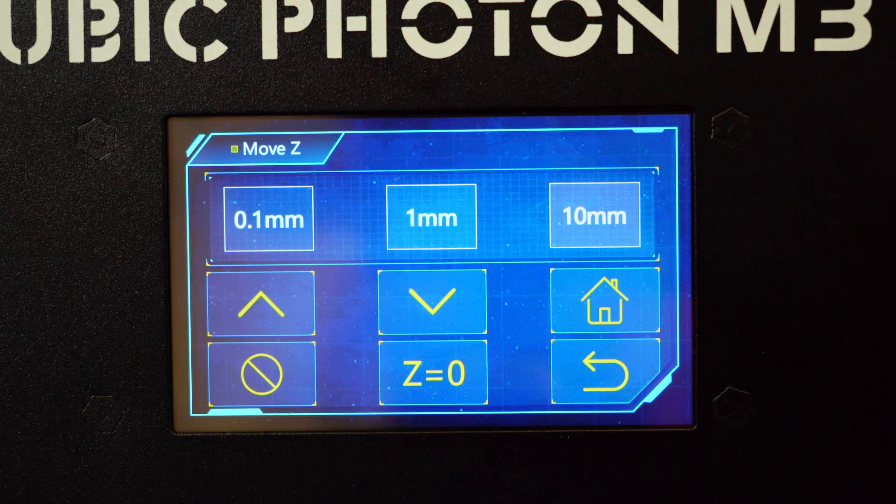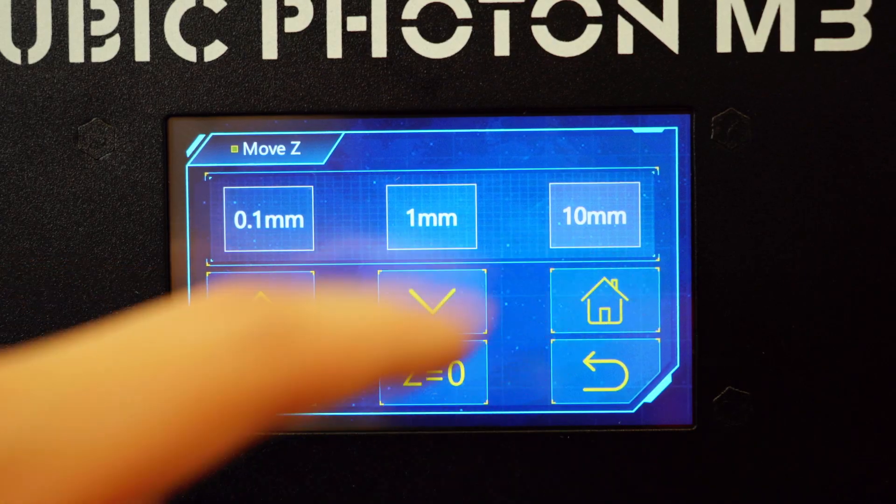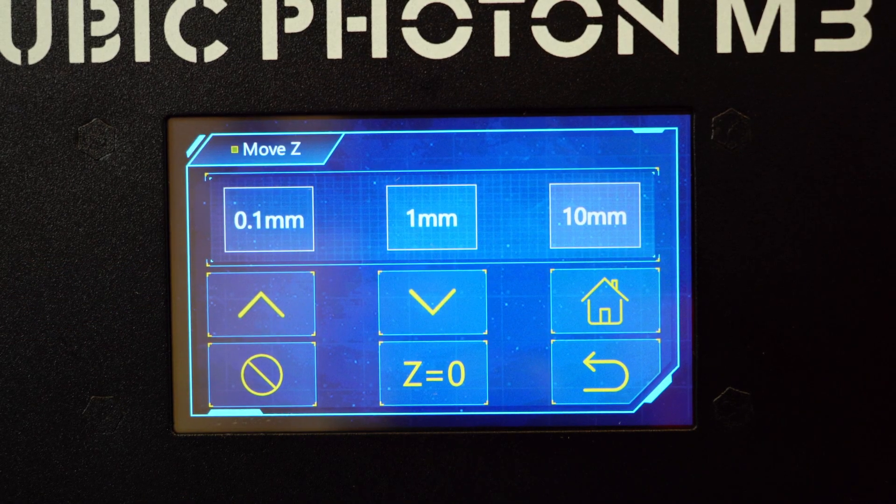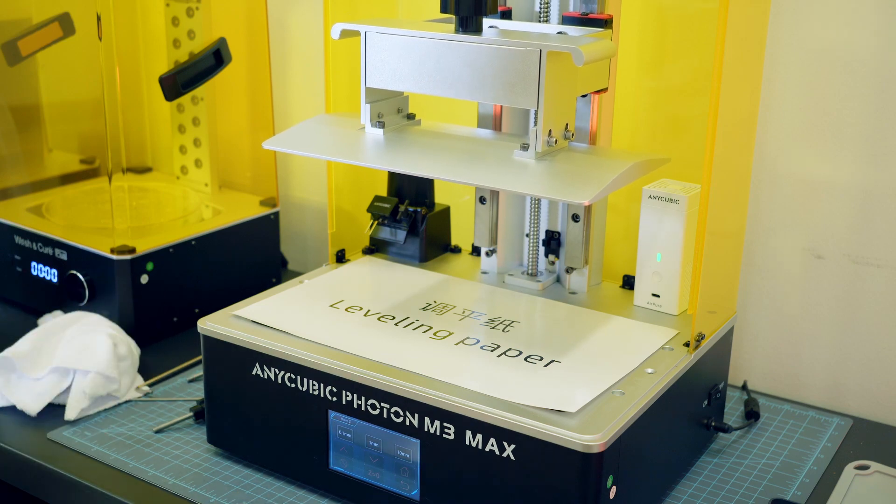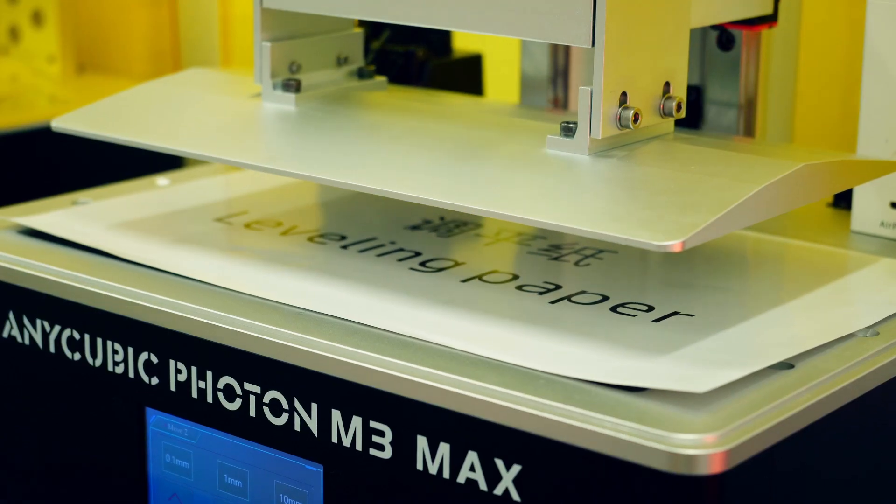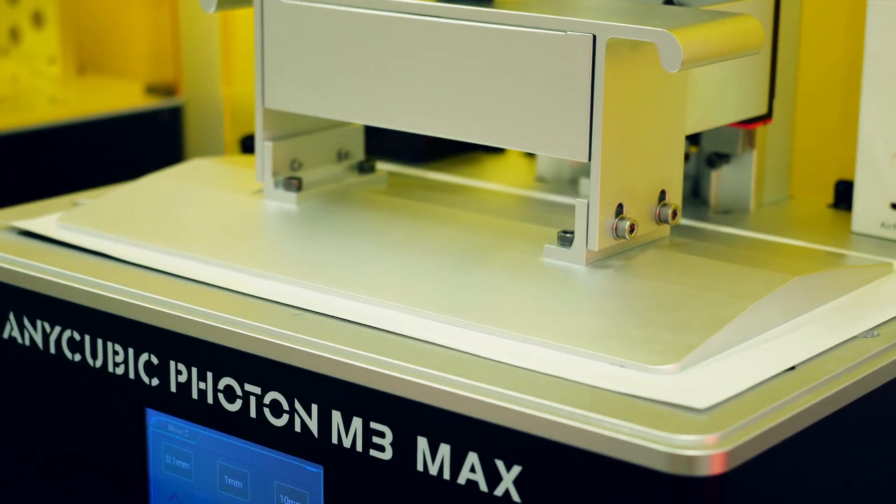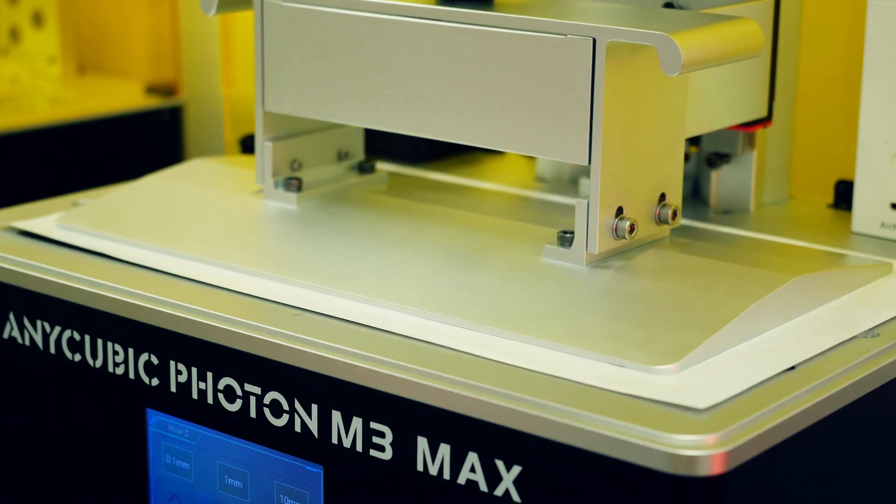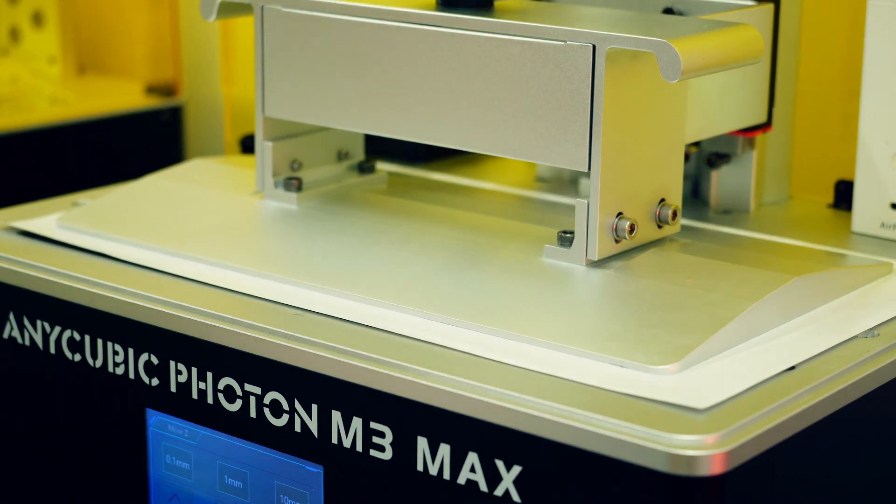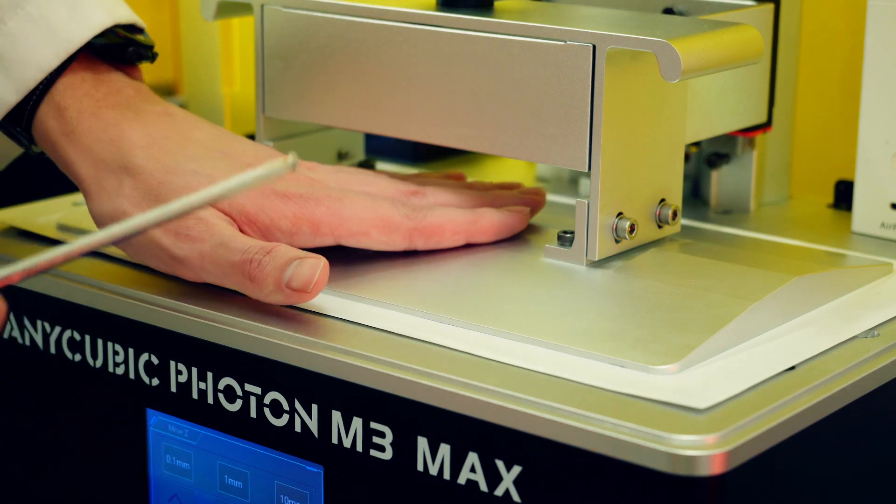Okay so once your build plate is loose go to tools and move z. So I'm going to say home. So I'm going to home the build plate and it's going to send the build plate down onto the leveling paper.